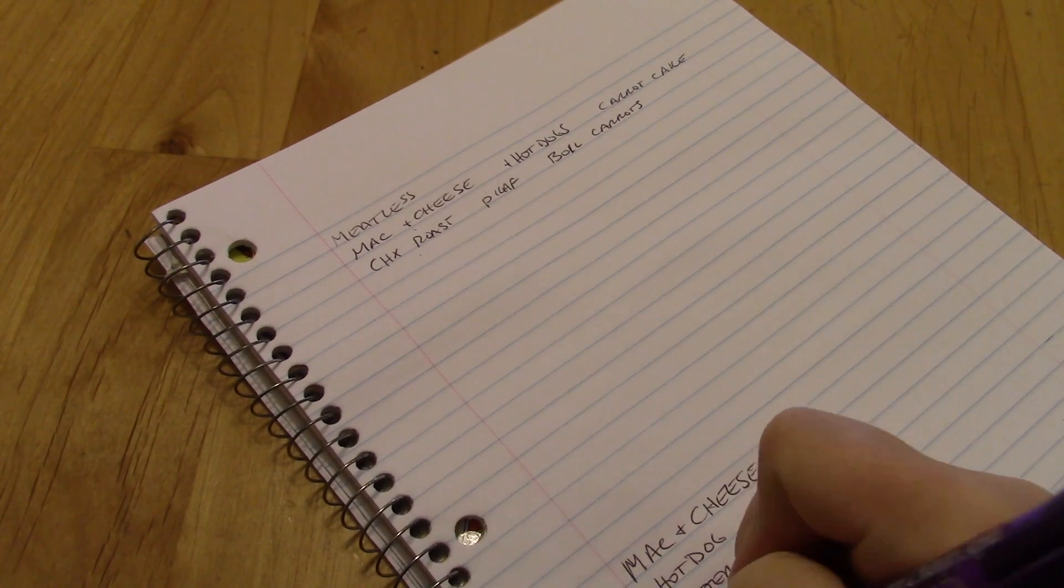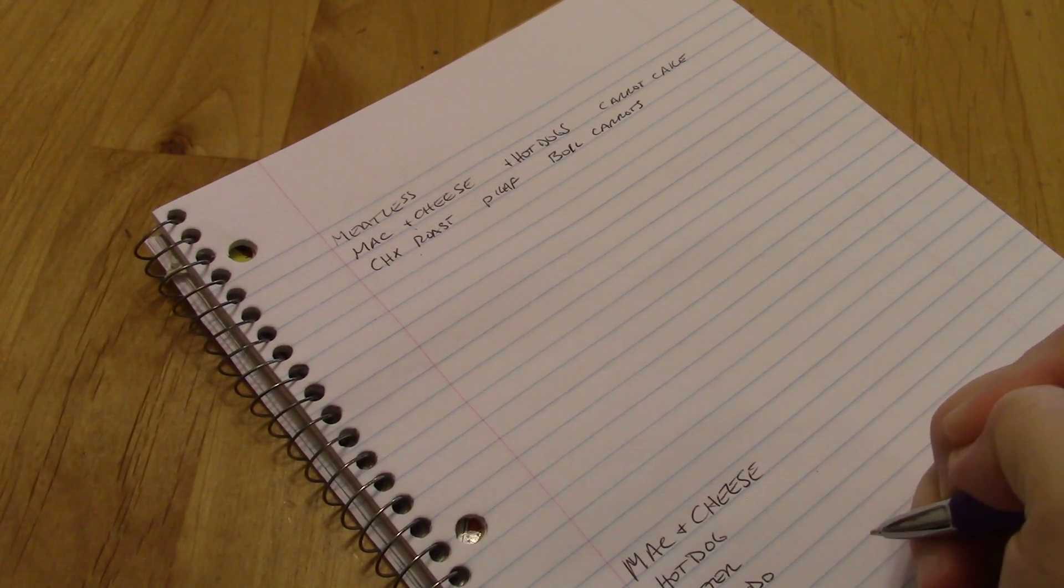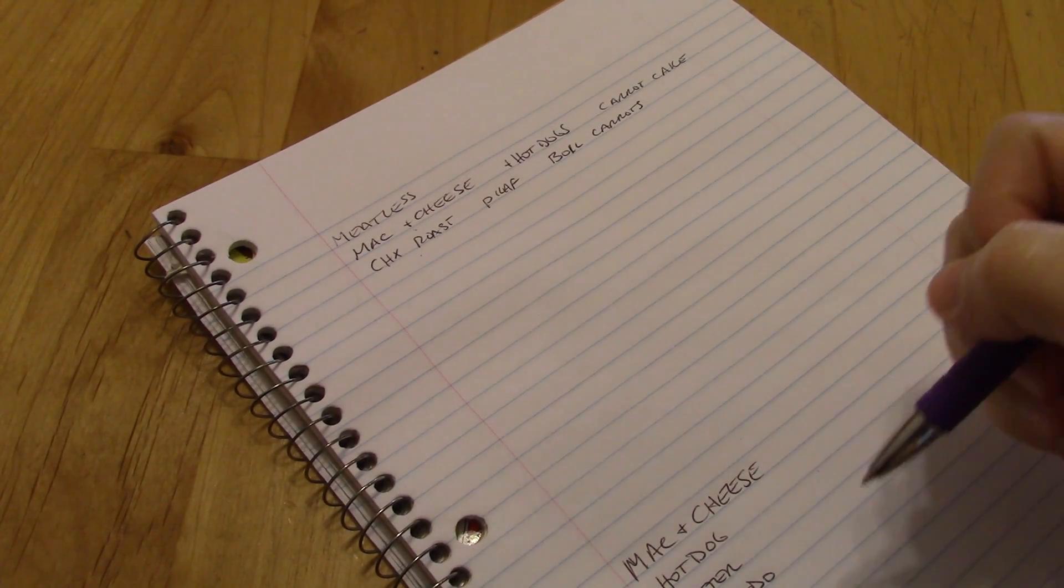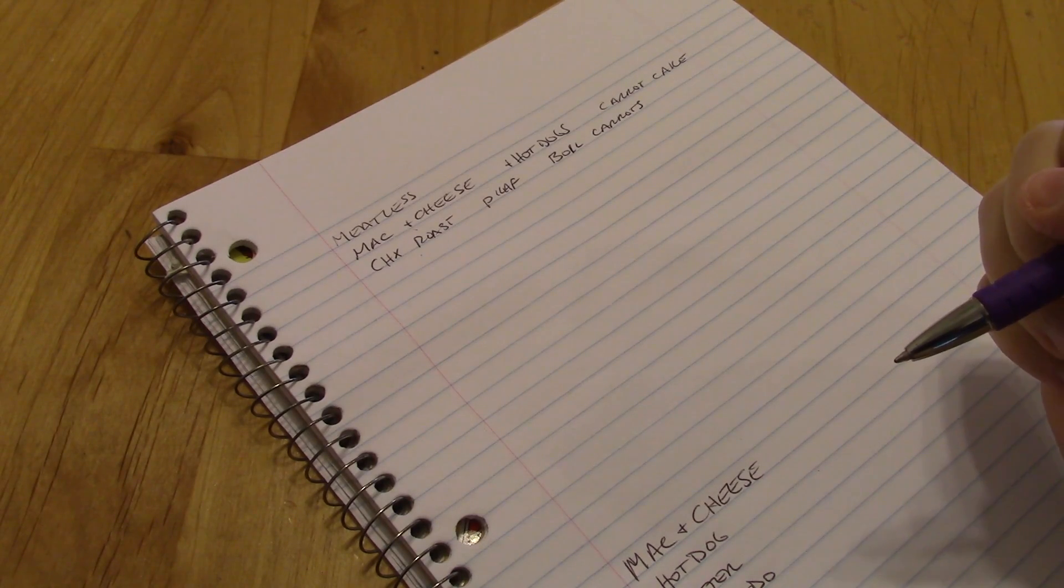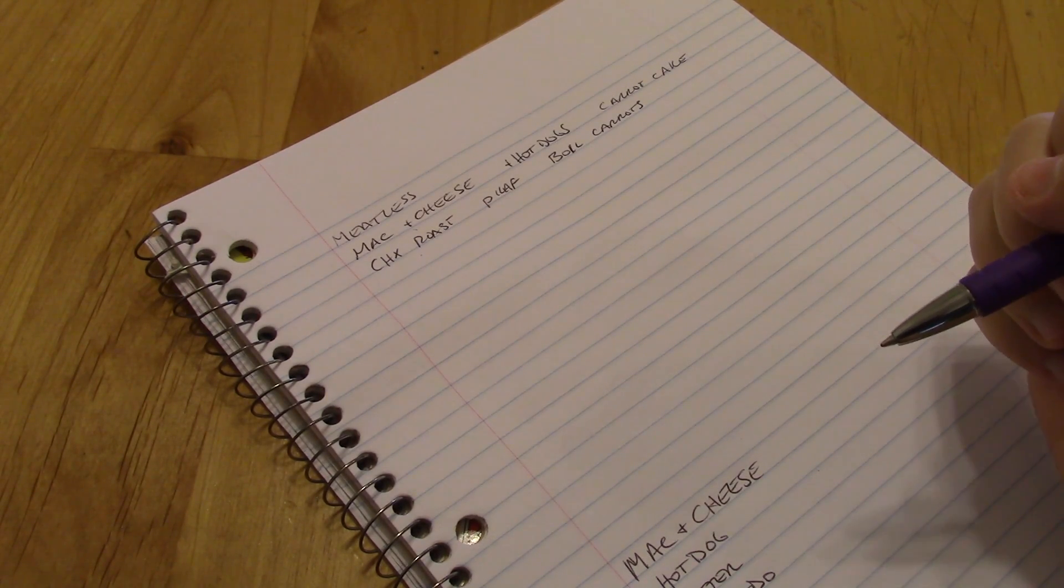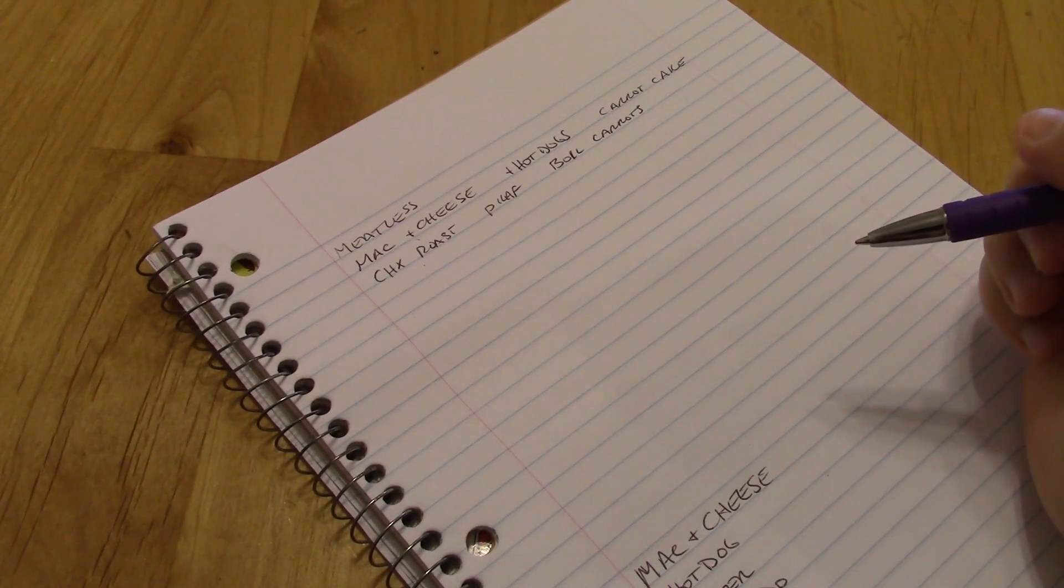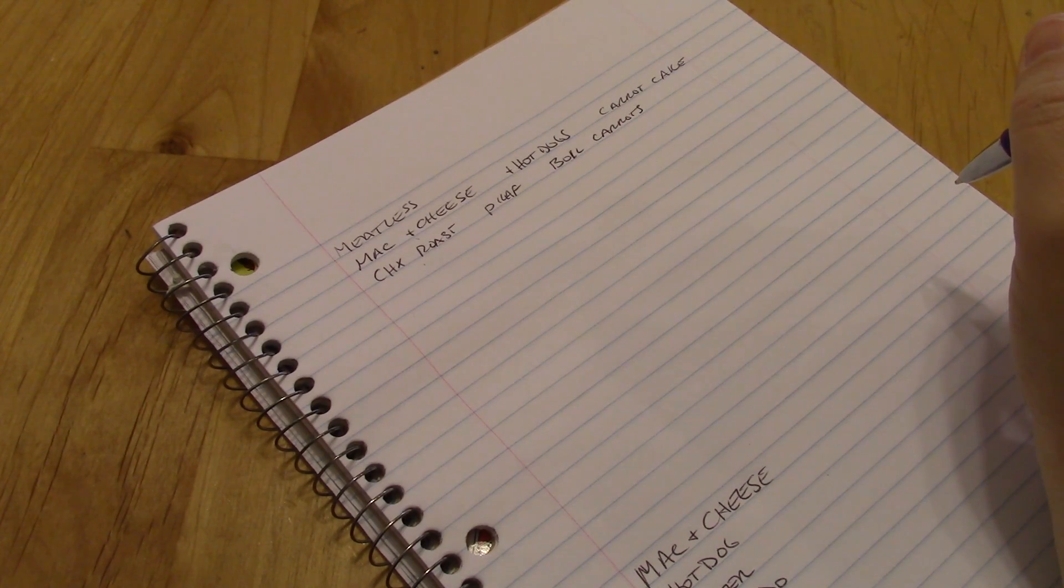I'm going to go ahead and put onions on my grocery list because I just have a few and I'll be using them throughout this week. I want to make sure I have plenty. I always like to have onions on hand. I pretty much add onions to every savory recipe, starts with onions. So that's two meals. I still don't have a meatless meal, but that's fine. We'll come to that.